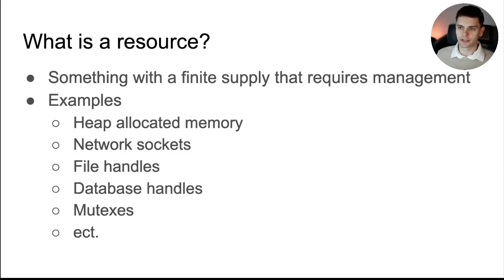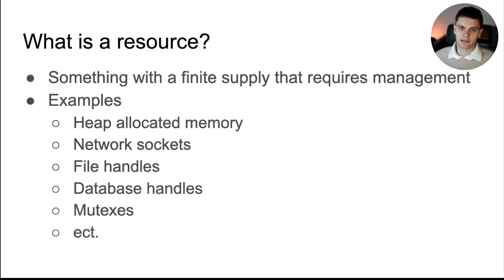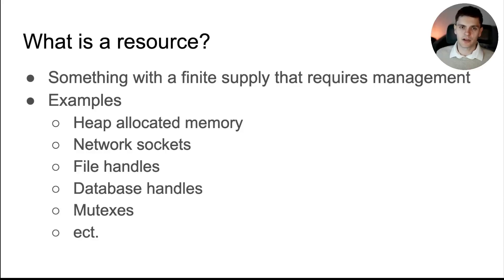A resource is something with a finite supply that requires management. An example would be memory allocated on the heap — the heap has a finite supply of memory, and developers must manage allocations and deallocations. Another example are network sockets, which are in finite supply, and developers must manage opening and closing them. Other examples of resources are file handles, database handles, mutexes, and more. Memory is just one resource; there are many other types, and all of them need to be managed.